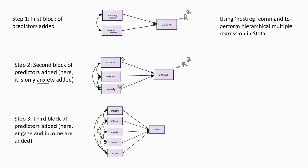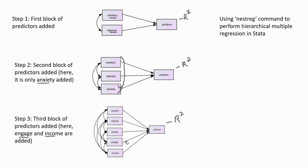The R-square value is reflecting the combined influence of all three of those predictors. Model one is nested within model two because model two has all three predictors whereas model one only has two. Then at step three, we're going to add in the third block of predictors, which include engagement and income. The R-square value in this model will reflect the combined influence of all those predictors.